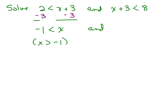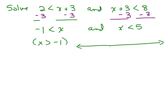Now let's solve the second inequality. Subtracting 3 from both sides gives x is less than 5. So we're looking for numbers that are greater than negative 1 and less than 5. I'm not going to go through the whole process of graphing both on a number line and doing an intersection — hopefully you're okay going directly to the answer here.